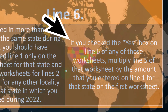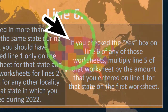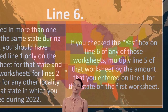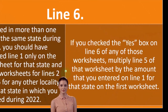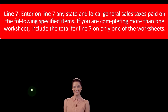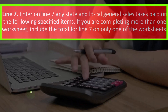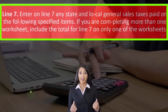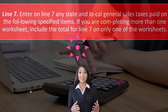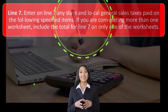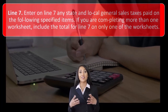On line six: if you lived in more than one locality in the same state during 2022, you should have completed line one only on the first worksheet for that state, and separate worksheets for lines two through six for any other locality within the state. If you check the yes box on line six of any of those worksheets, multiply line five of that worksheet by the amount entered on line one for that state on the first worksheet. On line seven, enter any state and local general sales tax paid on specified items — include the total for line seven on only one of the worksheets.